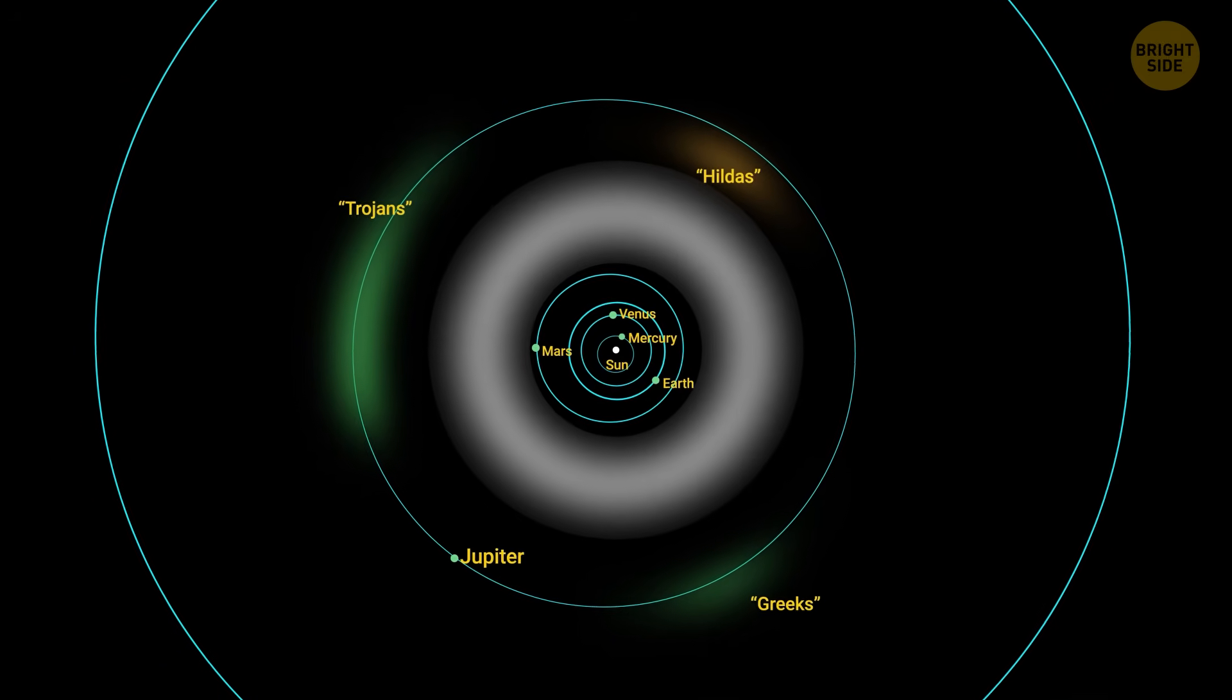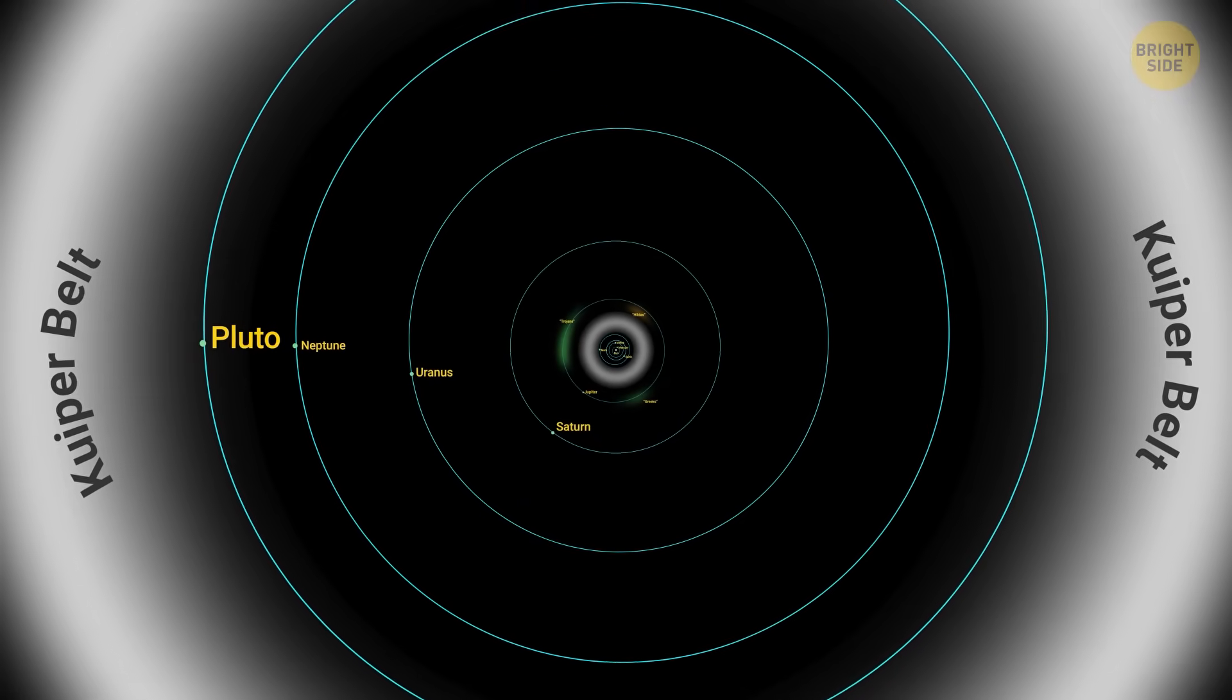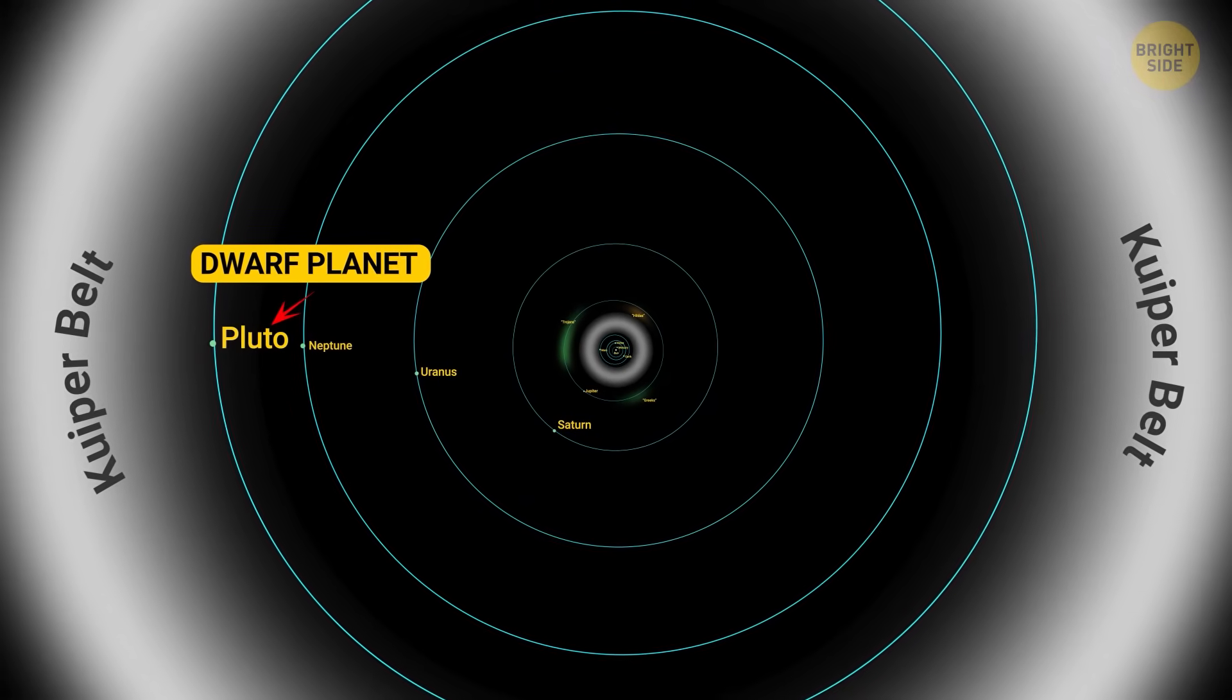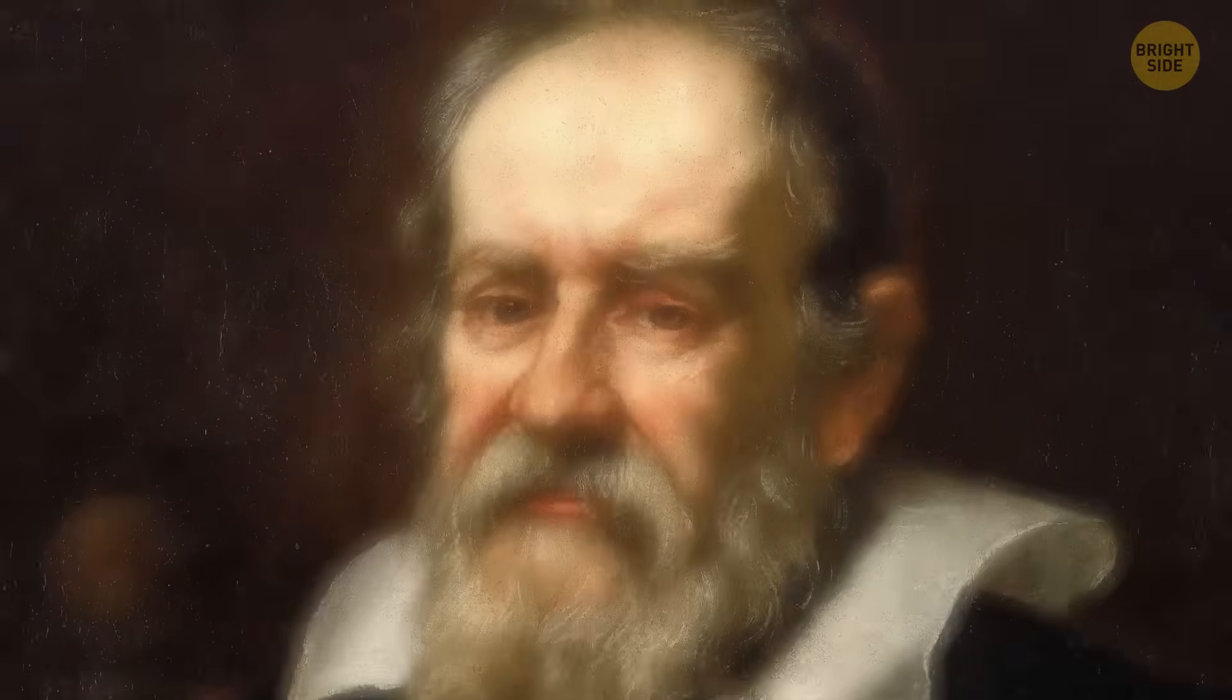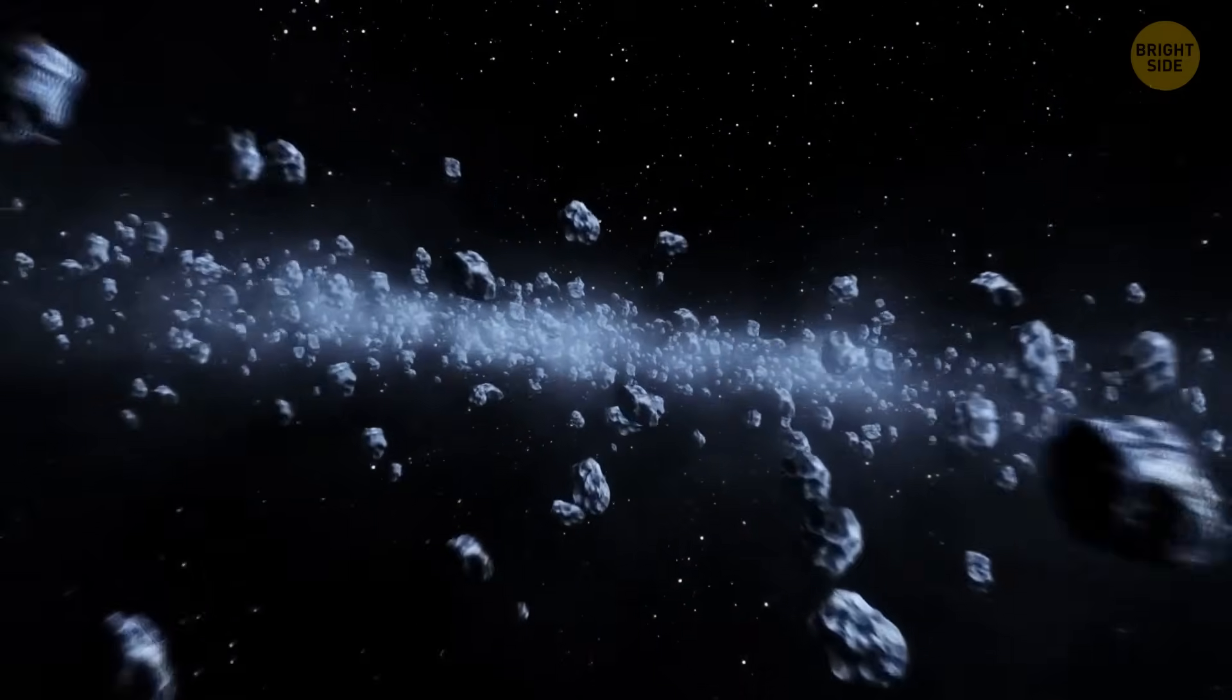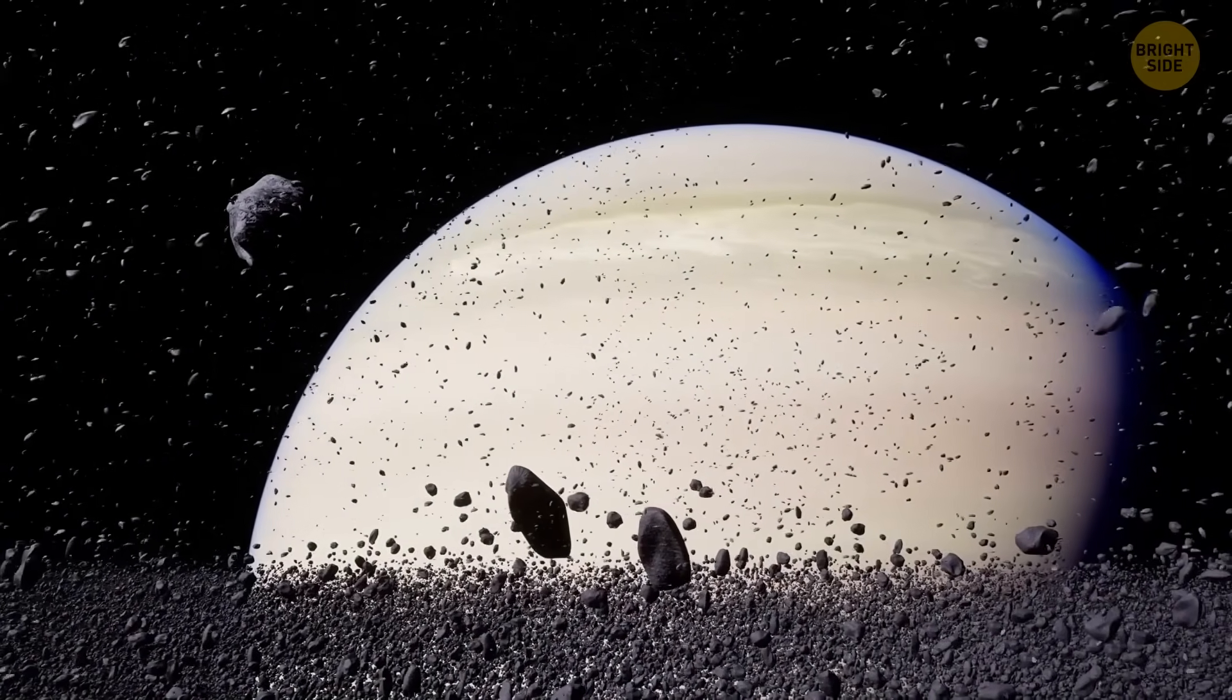For a long time, people thought Pluto was the ninth planet, but when it was reclassified as a dwarf planet, scientists started looking for a new planet X. Did they have a thing about odd numbers or what? And guess what? Some really think there might be a big, icy planet hiding far away beyond Neptune.